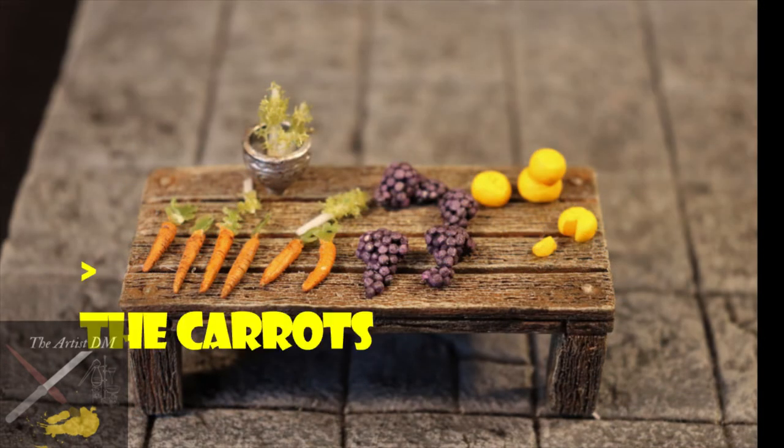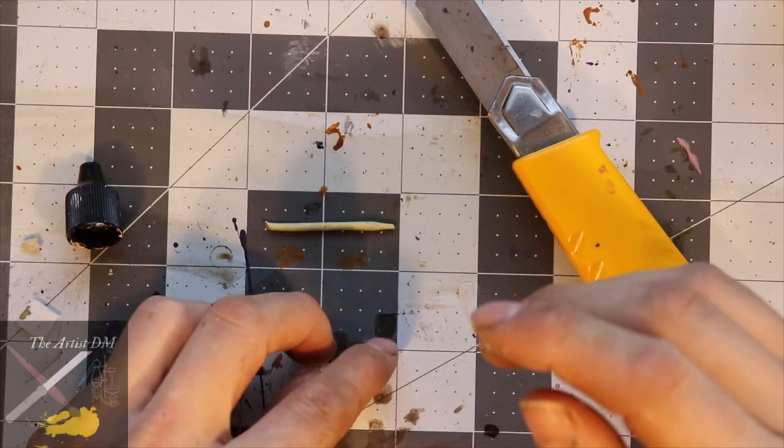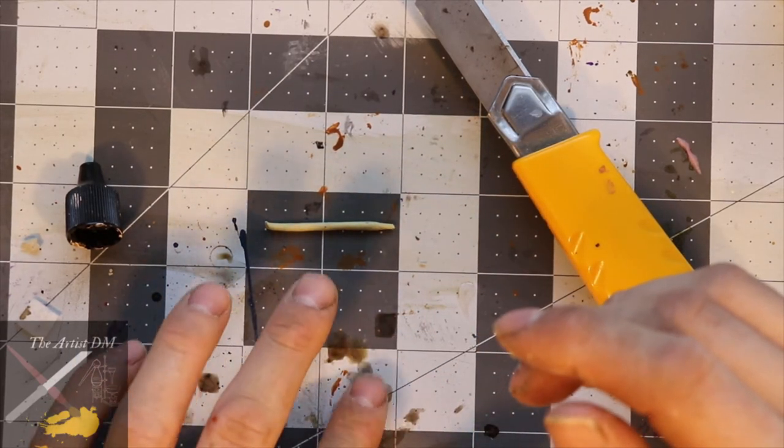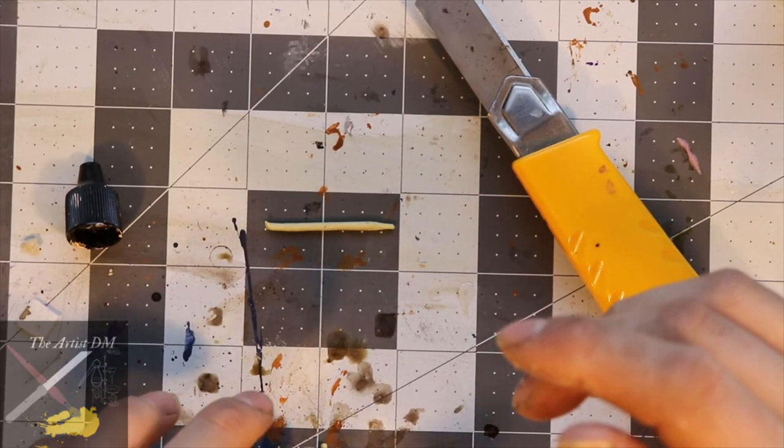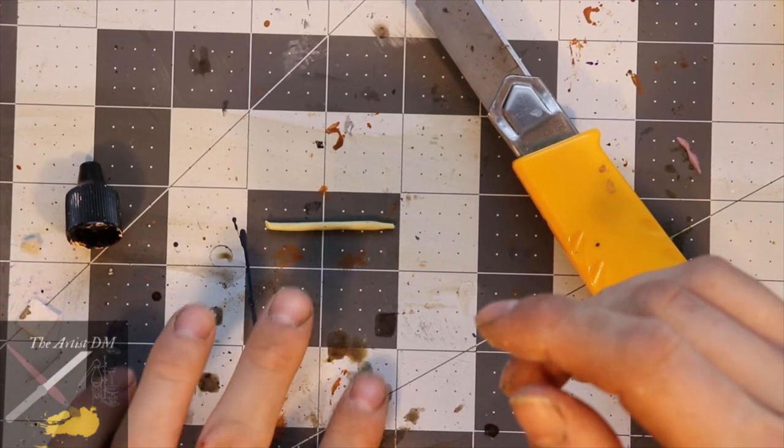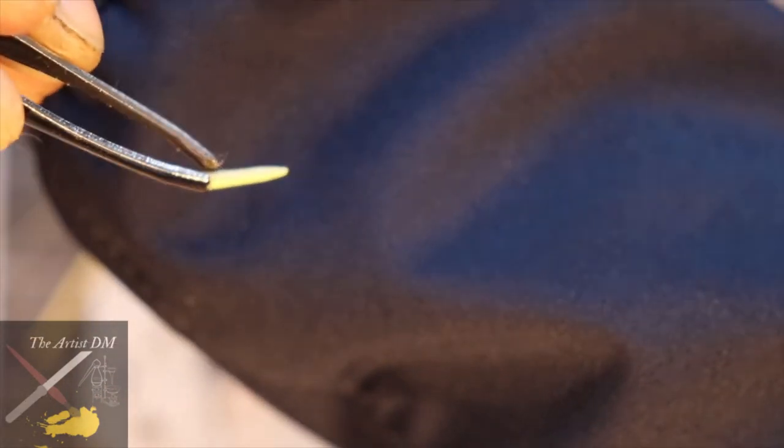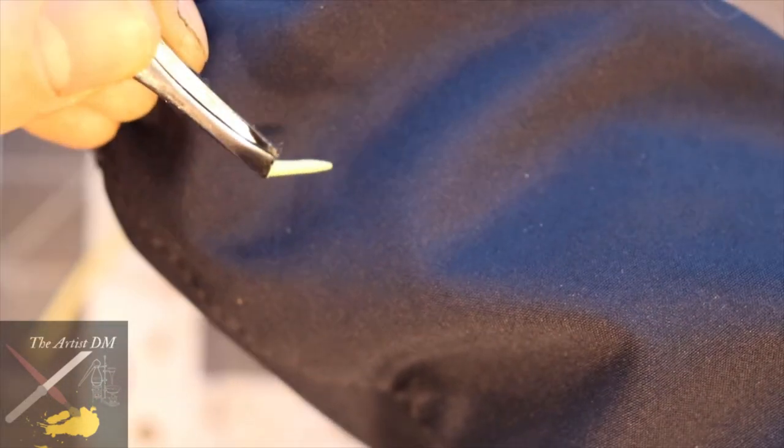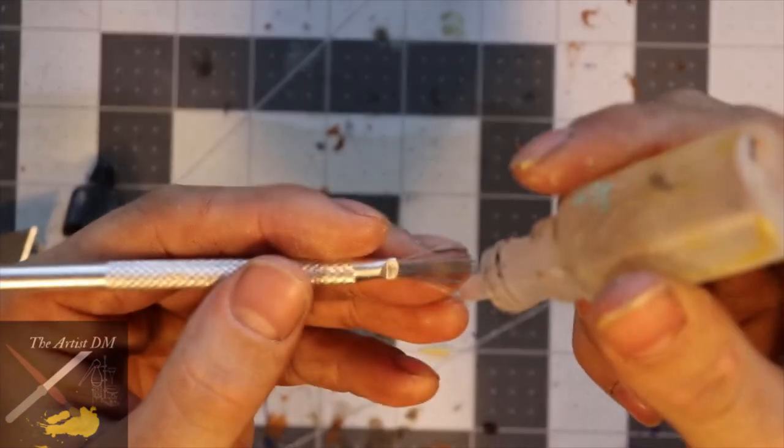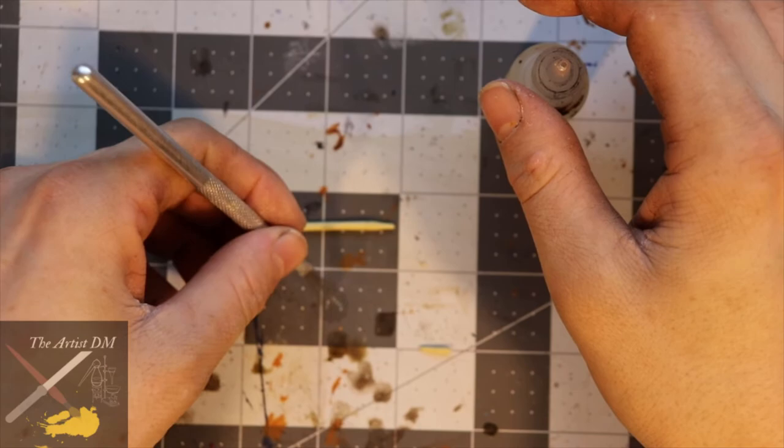Now we'll take a look at each of the items on the produce table, starting with the carrots. To make the portion of the carrot called the tap root, I used Milliput. I just rolled up a really skinny roll of it, cut it into segments, and then made it into conical shapes. It should look something like this.